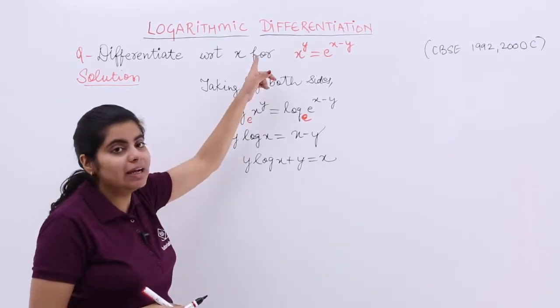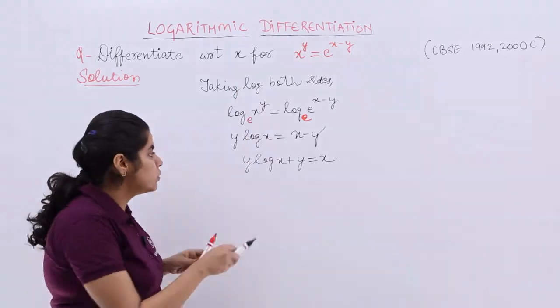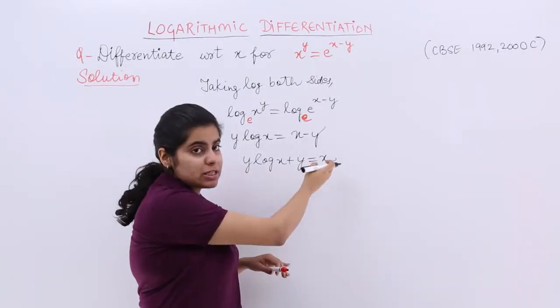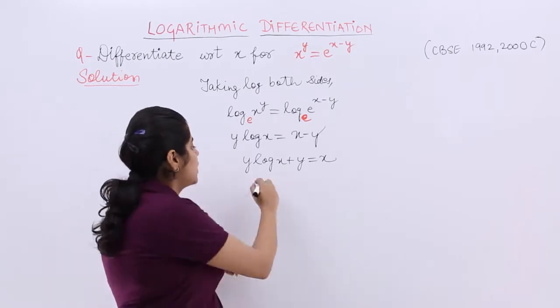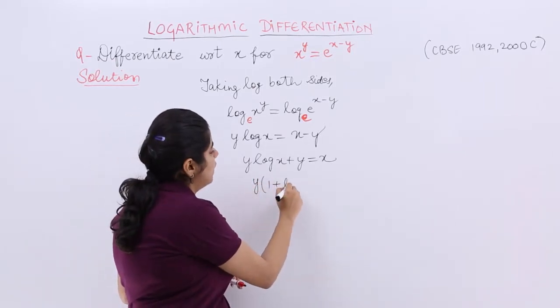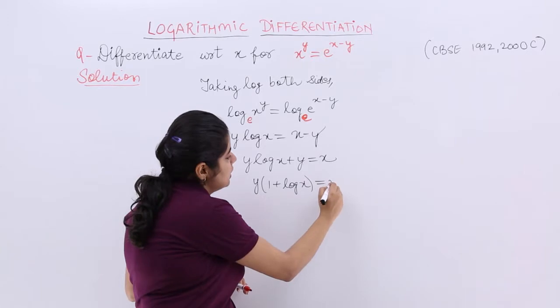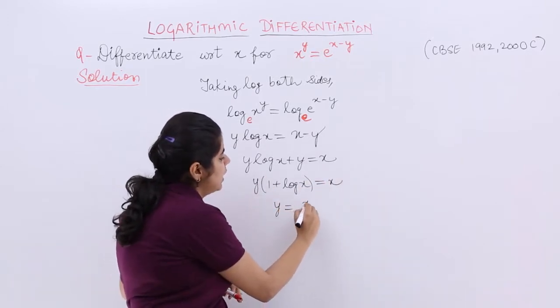I want to tell you one thing that we are not leaving our question here because the answer is still not complete. You have to take dy by dx. You have to differentiate. Now y log x plus y is equal to x. What you can do is you can actually see that here if y becomes common, it is 1 plus log x and here it is equal to x.